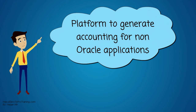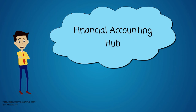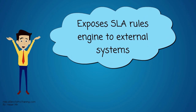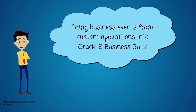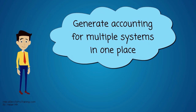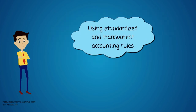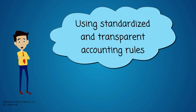This model was very successful. Oracle then decided to provide a platform for customers to generate accounting for all their non-Oracle applications and transactional systems using the same rule-based system. And so, Financial Accounting Hub was created, also called FAH. It exposes the SLA rules engine to external systems. This way, customers can bring business events from third-party or custom applications into Oracle E Business Suite. The Financial Accounting Hub generates accounting for multiple systems in one place using standardized and transparent accounting rules.